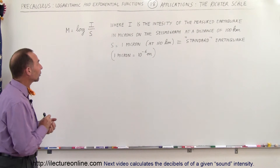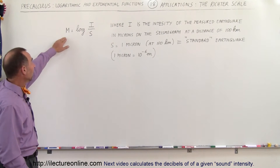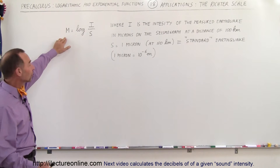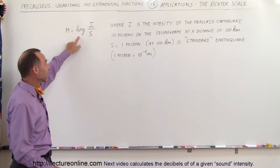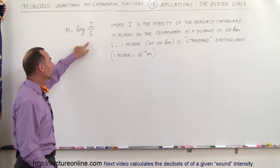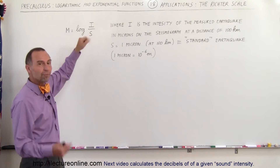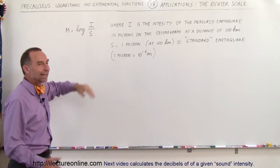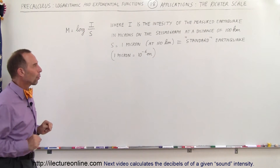The equation is rather simple. m, which is the magnitude of an earthquake on the Richter scale, is equal to log base 10 of the ratio of the intensity of the measured earthquake divided by the intensity of a standard earthquake.